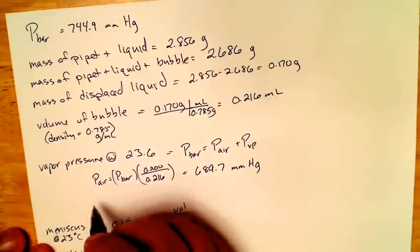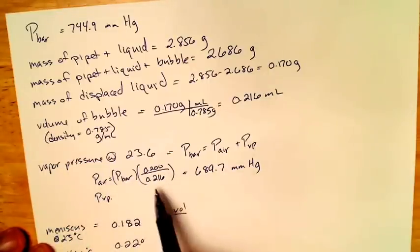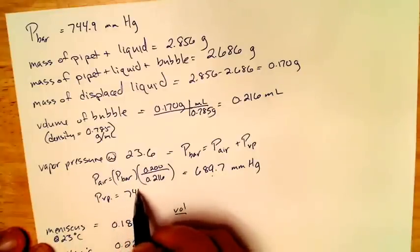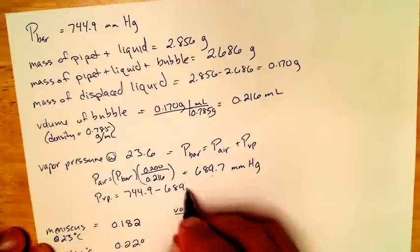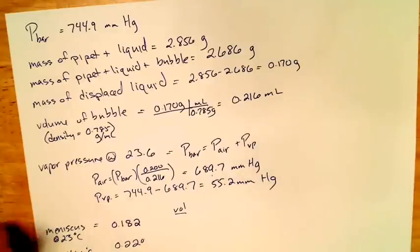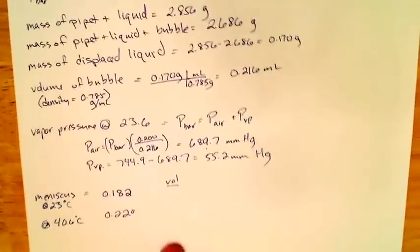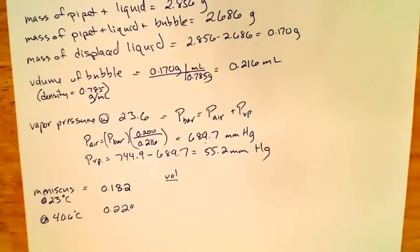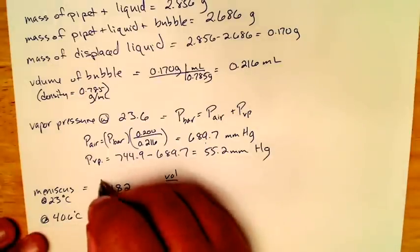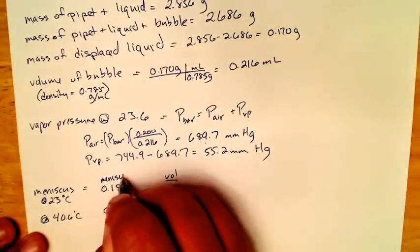And so then, if we want to know what the vapor pressure is then, the vapor pressure is just the difference between this and atmospheric pressure. So we can just say that then 744.9 minus 689.7, and that equals 55.2 millimeters of mercury. So that gets us our first volume. All right, so now, that gets us to what happens at 23 degrees.